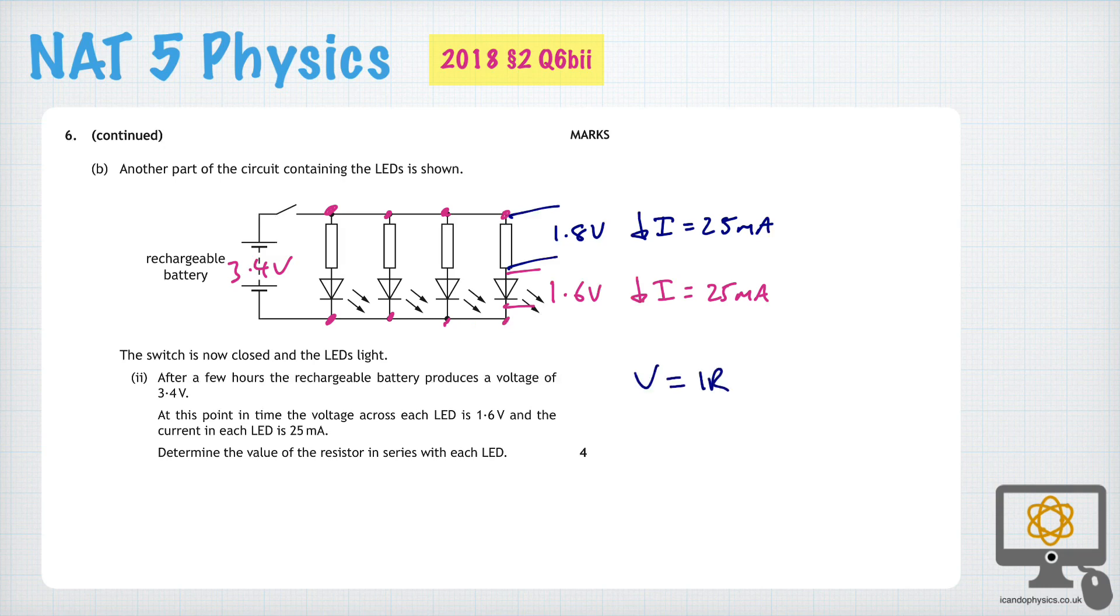V equals IR. So therefore 1.8 is equal to 25 milliamps, which is 25 times 10 to the minus 3, times the resistance of that resistor. And that gives us a value of 72 ohms for the resistance of the resistor.